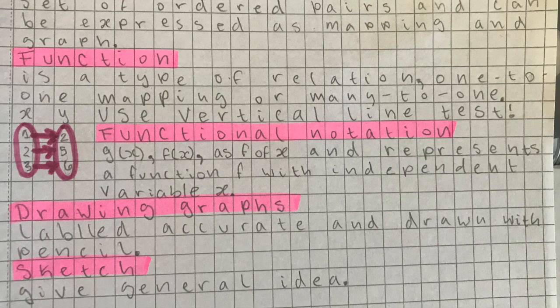We will go on to Chapter 2.3, which is about drawing graphs. All you have to know here is that the IB uses certain command terms: 'draw' and 'sketch,' and these mean different things. If they say draw, they mean you should draw a to-scale, accurate, labeled graph. Meanwhile, if they say sketch, it means you have to show the general idea of how the graph would look.